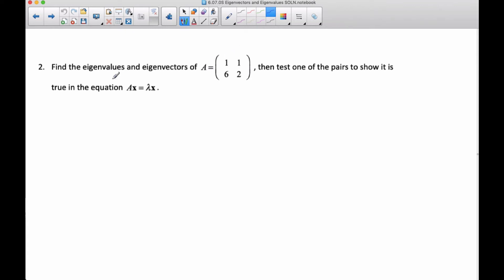Mr. Robs here. We're going to do another example of finding eigenvalues and eigenvectors. And then we're going to test one of the pairs to show that this equation, which is what we ultimately started with, is true.